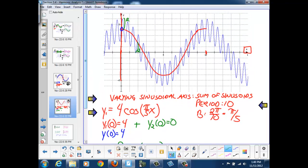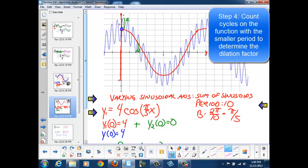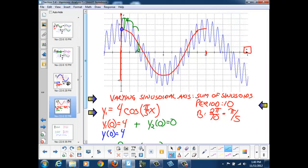Finally, we need to determine the period. We need to figure out just how much this particular sinusoid has been dilated. So we're going to count cycles again from the start of the red graph's period to the end of the red graph's period. And here's 1, 2, 3, 4, 5, 6, 7, 8, 9, 10, 11, 12, 13, 14, 15, and 16.